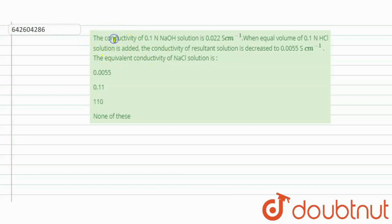The question says that the conductivity of 0.1 normal NaI solution is 0.022. When equal volume of 0.1 normal HCl solution is added, the conductivity of resultant solution is decreased to 0.0055. The equivalent conductivity of NaCl solution is?